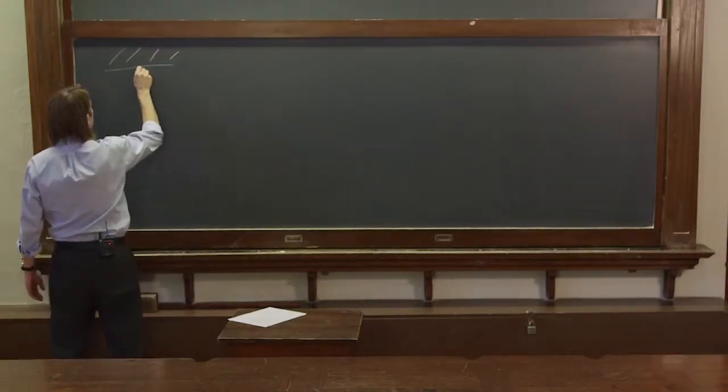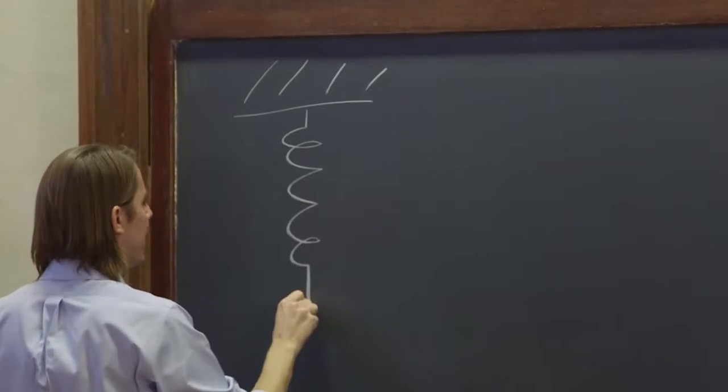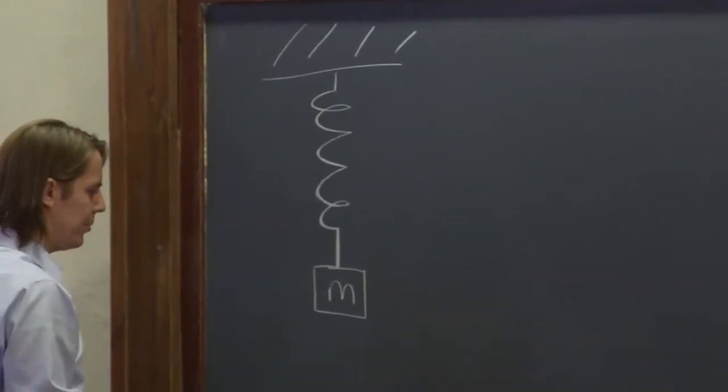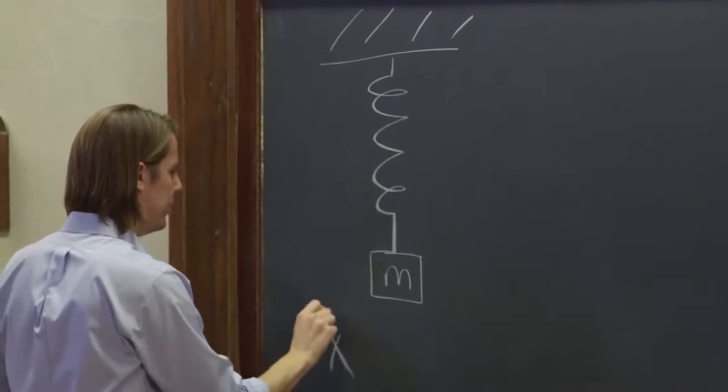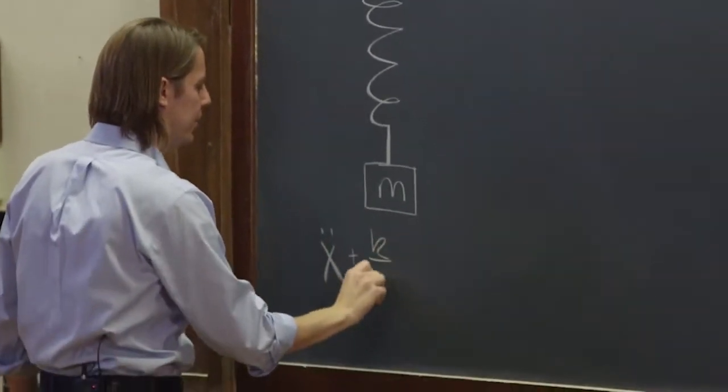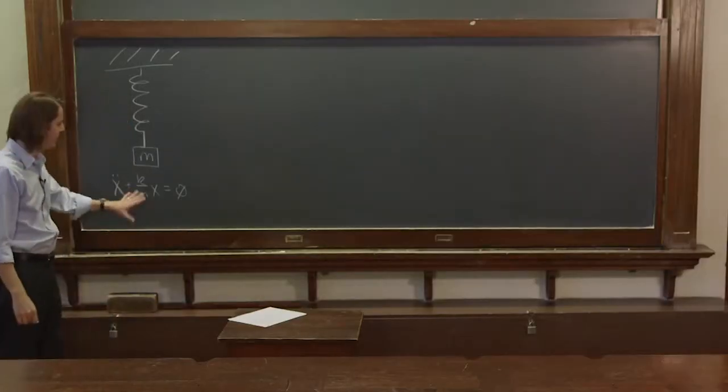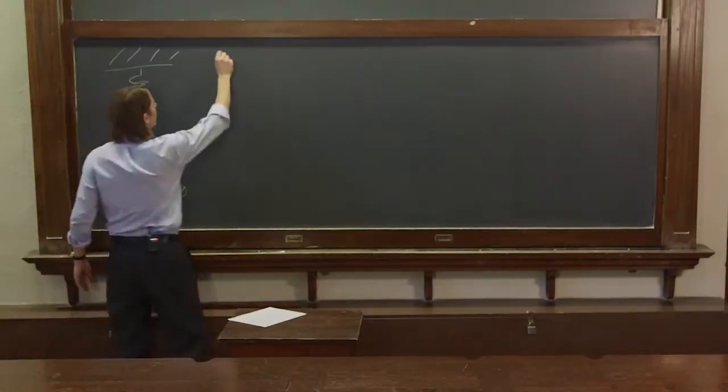So let's draw our mass on a spring. And remember, our equation of motion was x double dot plus k over mx equals 0. And when you see that, the solutions are oscillators.